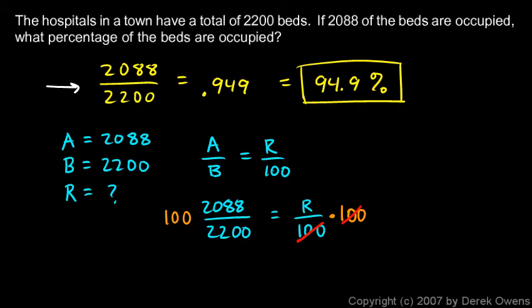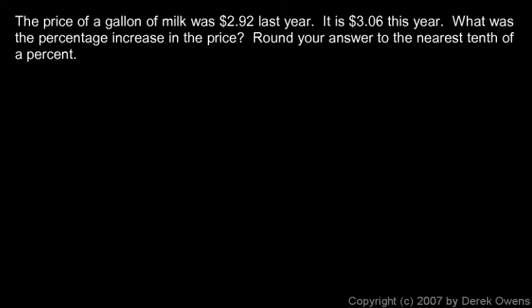In some cases it's easier to go straight to a simple fraction or simple multiplication. In this problem, the price of a gallon of milk was $2.92 last year and it's $3.06 this year. Most of the time prices rise, which is equivalent to saying the value of money gradually decreases — that's called inflation. Inflation is often measured in percentages, and that's what we're trying to find: the percentage increase in the price, what an economist would call the inflation rate.